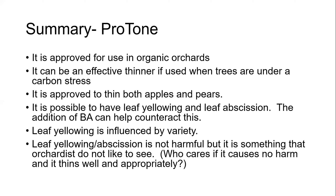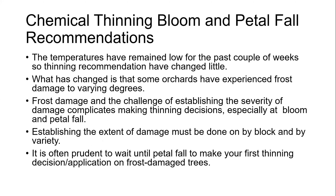In summary for Proton: it was approved for use in organic orchards — the only hormone spray I'm aware of approved for organic use. It can be an effective thinner when trees are under carbon stress, and it is approved to thin both apples and pears. Leaf yellowing and leaf abscission are possible; adding BA can help counteract that. Leaf yellowing is variety-influenced, is not harmful, and typically the leaves are on the ground within a week.